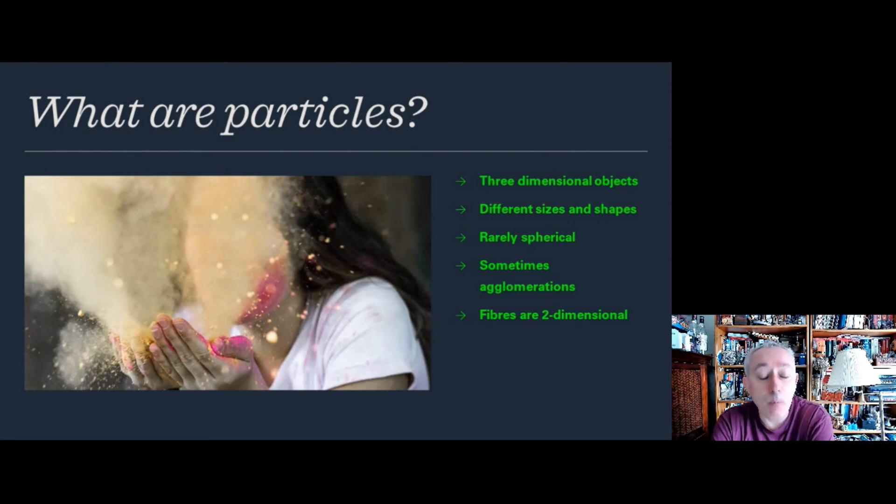Particles are mainly three-dimensional objects of the same order of magnitude, but they come in different shapes and sizes. They're rarely spherical apart from particles used to test particle counters, which need uniform design. Particles differ from fibers - fibers are two-dimensional, longer than wide.